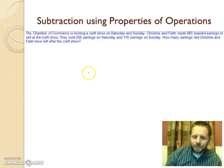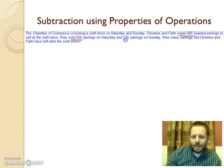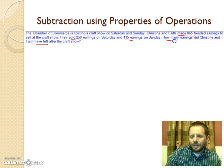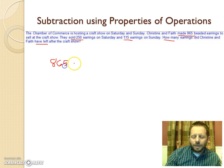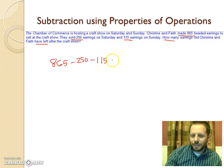Subtraction using properties of operations - again using the commutative and associative properties. This problem: the Chamber of Commerce craft show - she made 865 beaded earrings, sold 250 on Saturday and another 115 on Sunday. How many does she have left after the craft show? You can think of this two ways: subtract 250 first and then subtract 115, or add 250 and 115 together first and then subtract the total from 865.